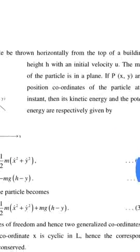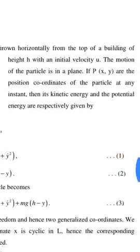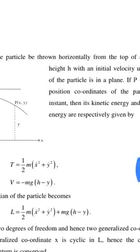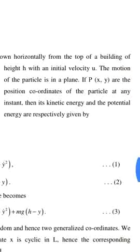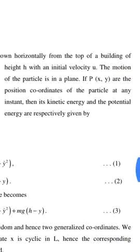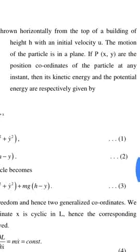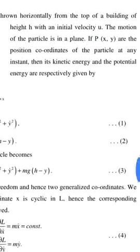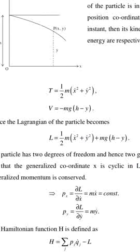The motion of the particle is in a plane. If x, y are the position coordinates of the particle at an instant, then its kinetic energy and potential energy are given respectively by: T = (1/2)m(ẋ² + ẏ²), V = -mg(h - y).